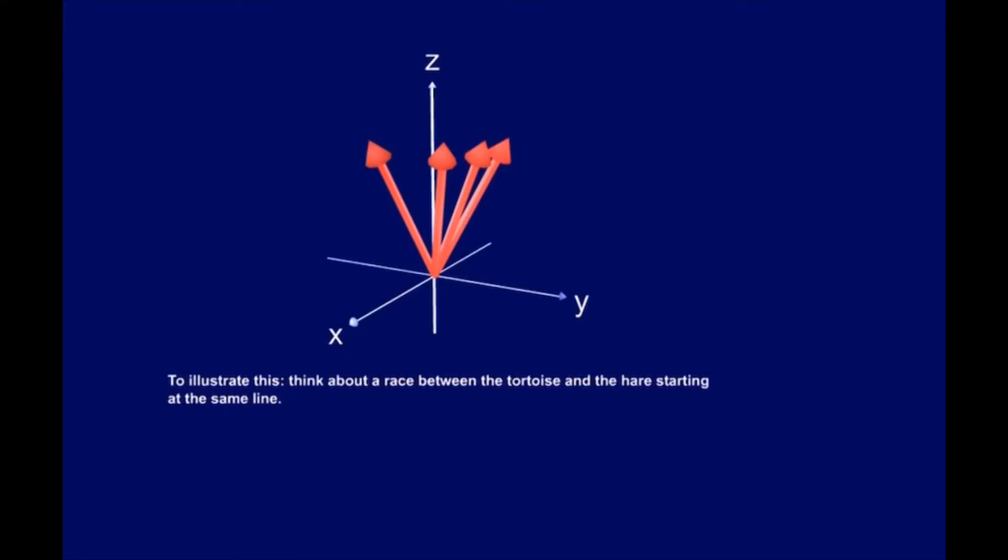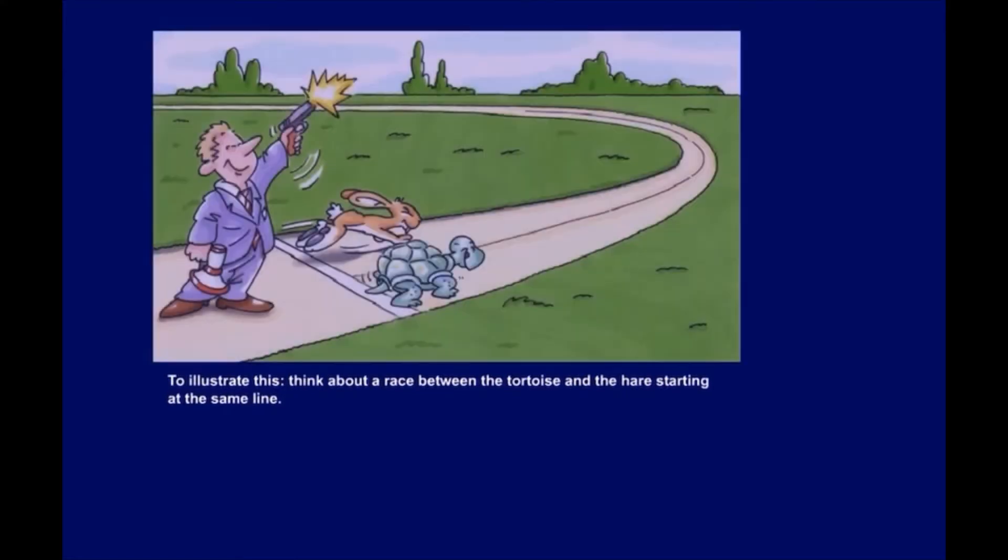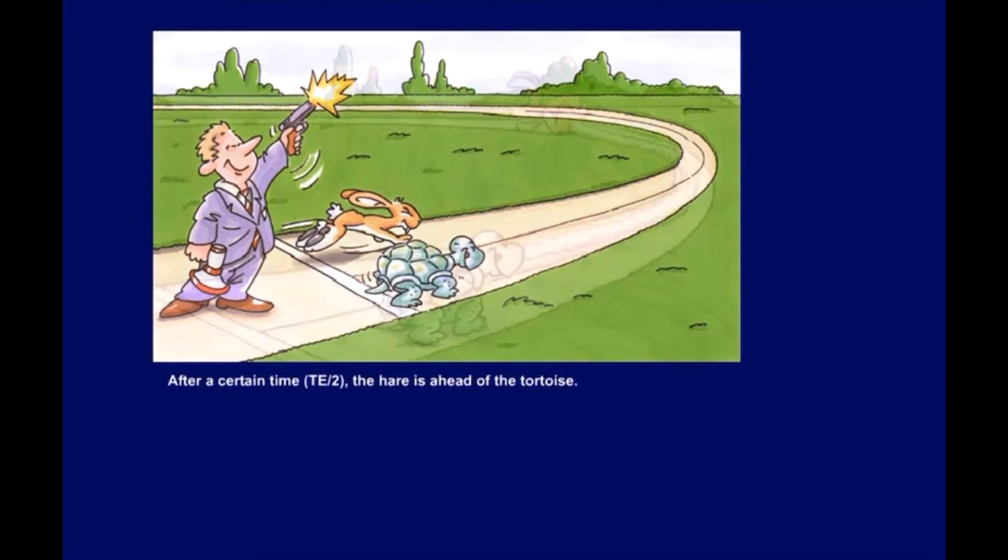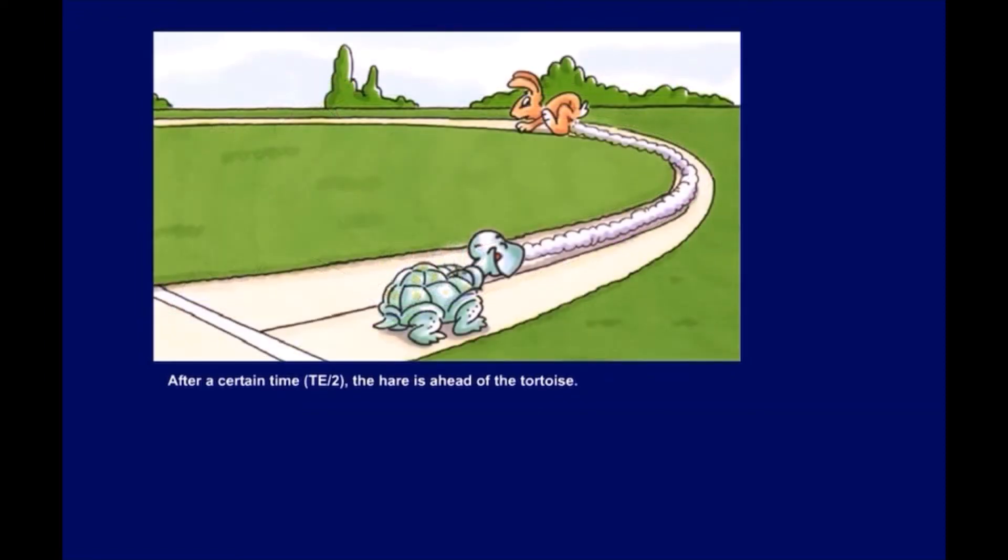To illustrate this, think about the race between the tortoise and the hare, starting at the same line. After a certain time, half of TE, the hare is ahead of the tortoise.